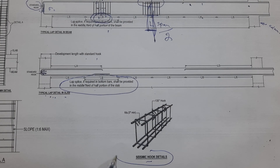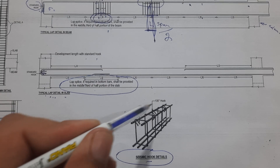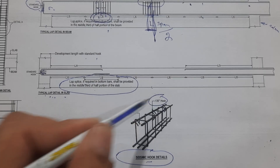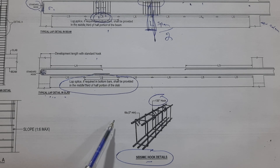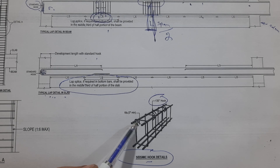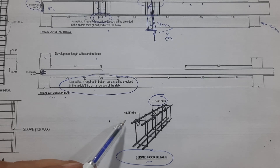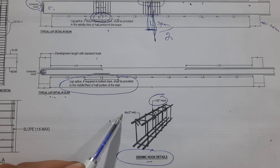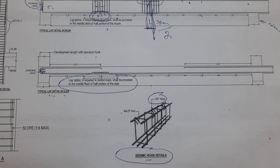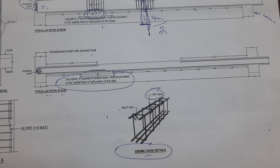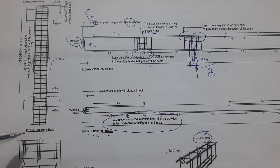Next is the typical beam seismic hook detail. The hook should be bent at 135 degrees — do not provide at 90 degrees. Next, the hook length should be a minimum of 3 inches or 6D, where D is the diameter of the steel. These are the seismic hook details.